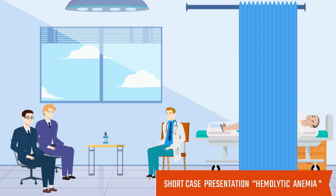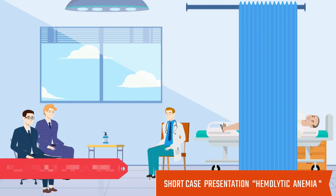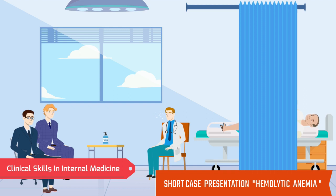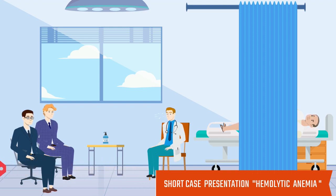Spleen is also palpable and is 5 cm from the left costal margin, extending towards the right iliac fossa. It is moving with respiration. Spleen is soft, non-tender, and having smooth and round margins. Splenic notch is also palpable.